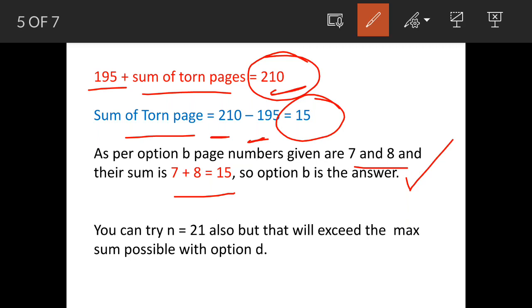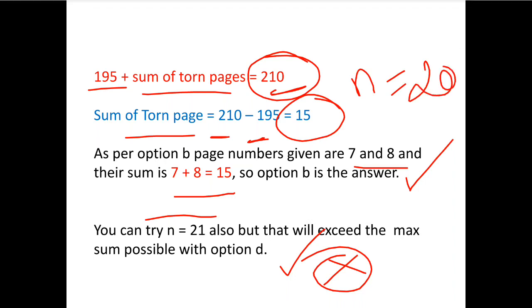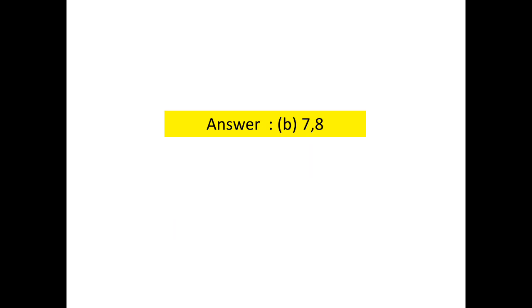Now you can further try value of n as 21, but you will find that you exceeded the maximum possible value with option D, so this is also not possible. So option B is the only possible answer and value of n will be 20. So the answer is option B: 7 and 8.